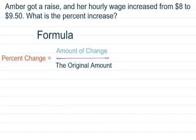The formula looks like this. To figure out the percent change, which in this case is a percent increase, we're going to take the amount of change and divide it or put it over the original amount.